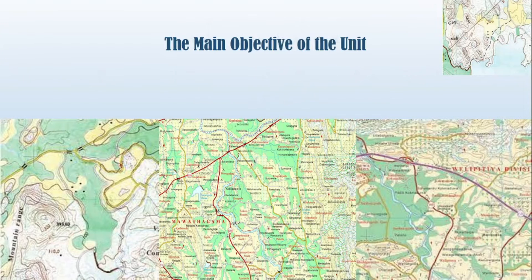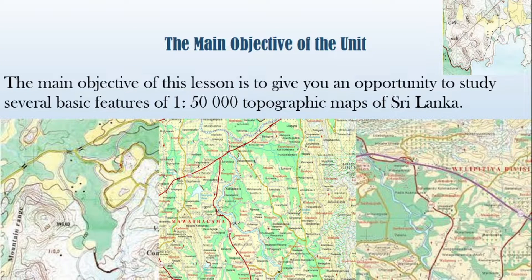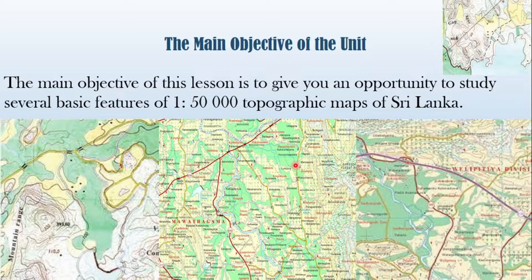Now let's move on to learn about the main objective of this unit. The main objective of this lesson is to give you an opportunity to study several basic features of 1:50,000 topographic maps of Sri Lanka. Here I have given you three pieces of a topographic map. When you look at this picture, you won't be able to understand anything if you haven't studied about 1:50,000 topographic maps — because of the various colors, symbols, letters, dots, numbers, and contour lines. But I am sure at the end of this series of videos, you will have a clear understanding.